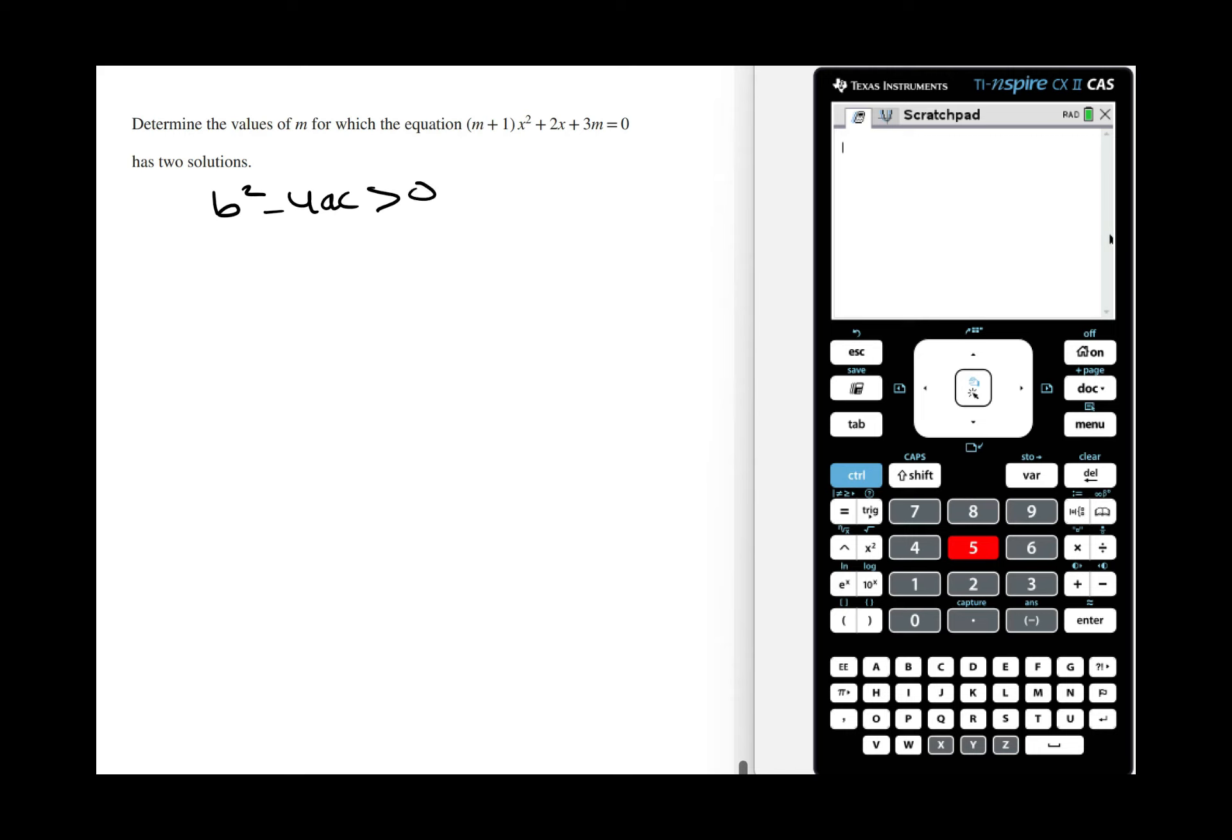The value of a is the coefficient of the x² term, the value of b is the coefficient of the x term, and the value of c is the constant.